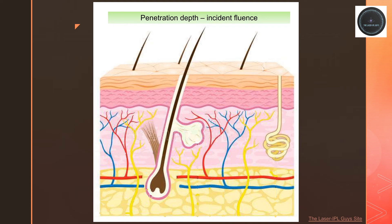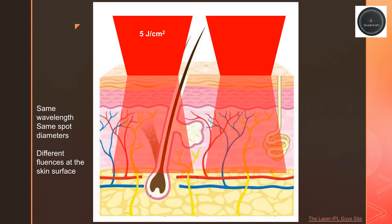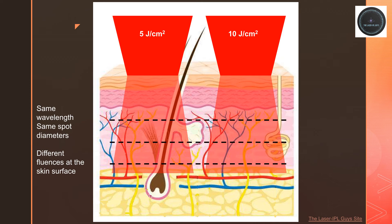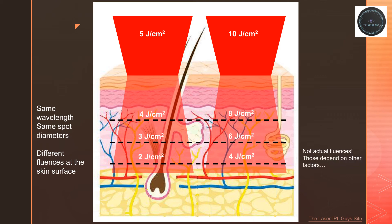Now let's look at the fluence at the skin surface. Let's look at two beams striking the skin surface with the same wavelength and spot diameters, and compare two fluences: one at 5 joules per square centimetre and the other at 10 joules per square centimetre. Fluence decreases exponentially as we go deeper into the skin. The left-hand diagram shows how the fluence may drop from 5 to 4 to 3 to 2 joules per square centimetre. However, if there's a higher fluence at the skin surface, then there will be a correspondingly higher fluence within the skin at different depths. This means that you can generate higher fluences deeper in the skin depending on the fluence at the surface, but you must be careful not to use too high a fluence at the skin surface in case you start to damage the skin.